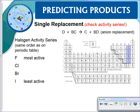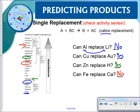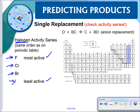We can also do single replacement involving an anion. For us, we're only going to look at halogens as anions. We have fluorine, chlorine, bromine, and iodine — fluorine is the most active with iodine being the least active. Go ahead and take out your reference sheet and your periodic table, because the activity series for halogens is on your periodic table.